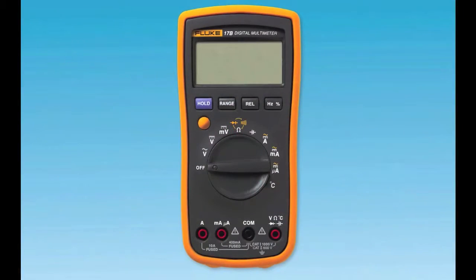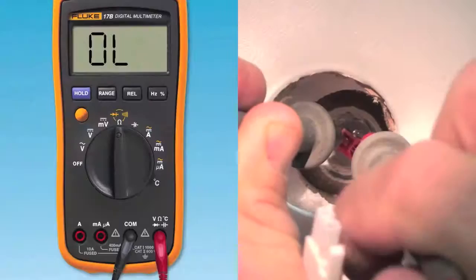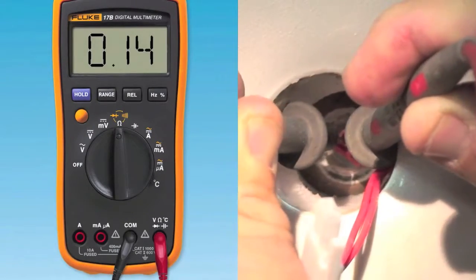To check the high-limit safety switch, set your meter to ohms and place the leads of the meter into the connector. You should measure resistance, which means that the switch is in the closed position.